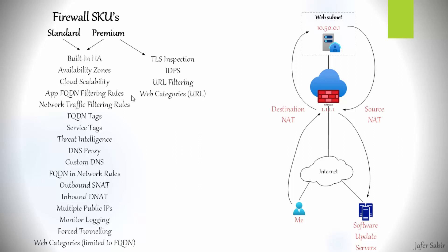Application FQDN filtering rules let you limit outbound HTTP and HTTPS traffic using fully qualified domain names. With network traffic filtering rules you can create rules that allow or deny traffic by source and destination IP addresses, port, and protocol. The firewall is also stateful, so it remembers the connection state for return traffic.